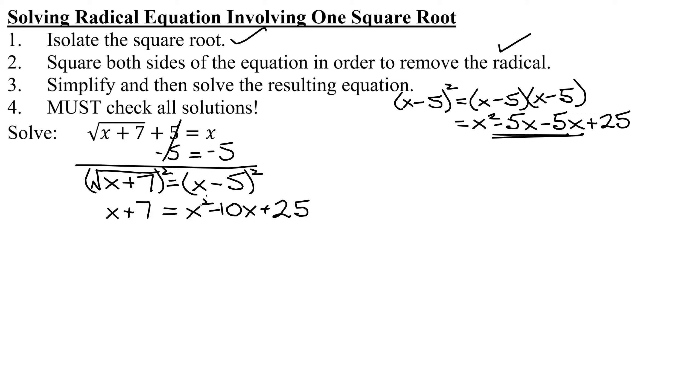So I'm going to have to subtract x from both sides. And I'm going to have to subtract 7 from both sides, being careful to line up like terms. And then I have x minus x is 0, 7 minus 7 is 0. So I get 0 on the left-hand side, equals x squared, negative 10x minus x is negative 11x, and 25 minus 7 is 18.